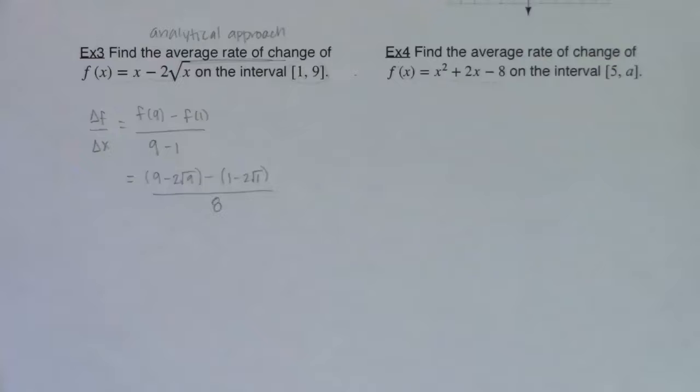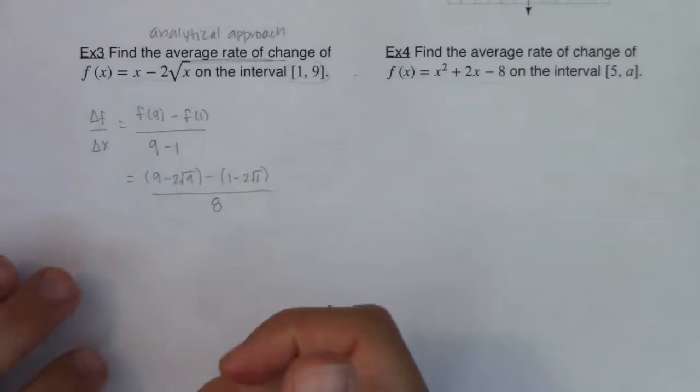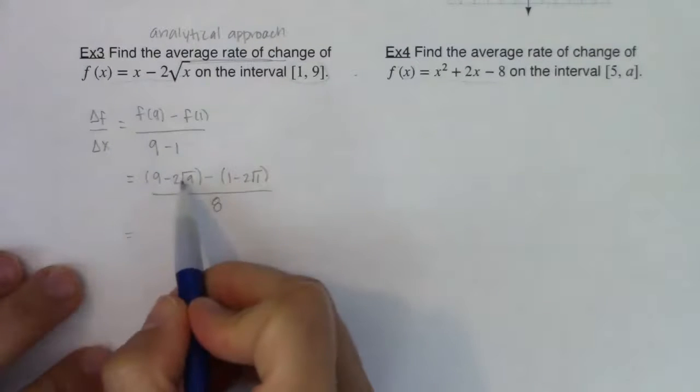All right, so I'm plugging 9 into my function to get the function value. I'm plugging 1 into my function to get the function value, and then now it's just some PEMDAS. So let's see what we have.